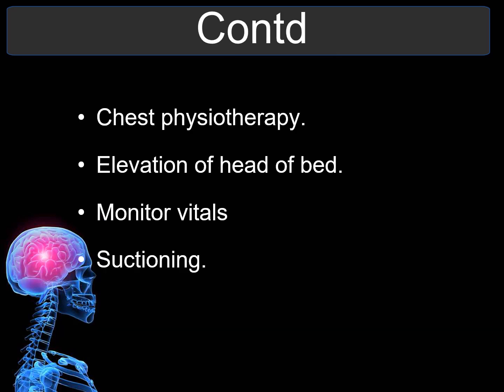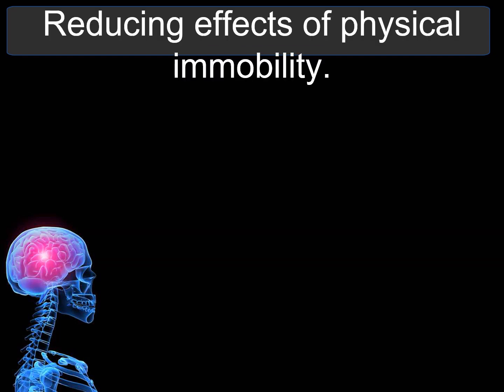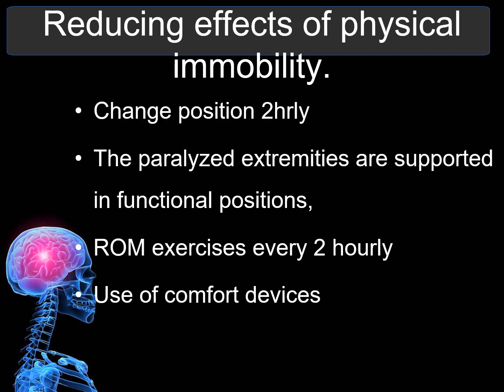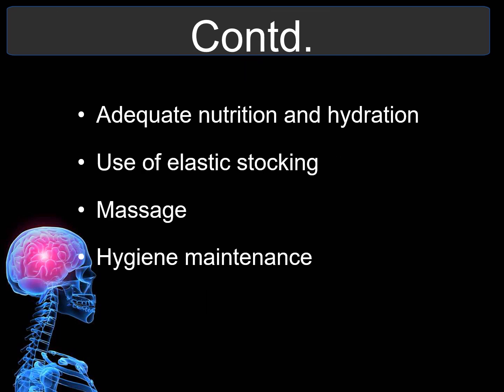Additional nursing interventions include chest physiotherapy, elevation of the head of the bed, monitoring vital signs and suctioning. To reduce the effects of physical immobility, change position every 2 hours. If there are paralyzed extremities, support functional positions. Perform range of motion exercises every 2 hours and use comfort devices. Maintain adequate nutrition and hydration, use elastic stockings, massage, and hygiene maintenance.